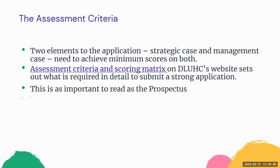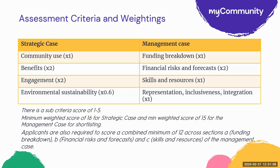We're now going to look at the assessment criteria that the Department of Levelling Up Homes and Communities uses. As mentioned previously, there are two elements of the application: the strategic case and the management case. Both need to achieve minimum scores to pass. Please look at the assessment criteria and scoring matrix on DLUC's website, which sets out what is required to submit a strong application. In that document you'll find a table showing the different sub-criteria for both the strategic case and management case, as well as the weighting the funder uses to understand how important each part of the application is.